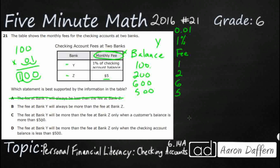The bank fee at Y will always be more than the bank fee at Z. We actually just answered that question — the bank fee at Y doesn't start as more. If you've got small balances like $100, $200, $300, the bank fee at Y only gets more when it's greater than $500. Notice the key word here: 'always' — sometimes yes, always no. So, no on B.